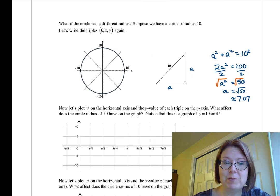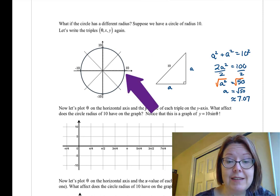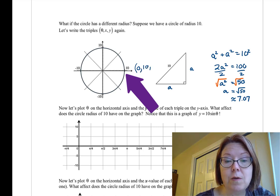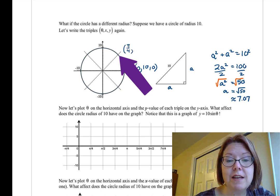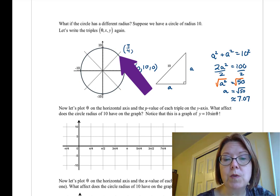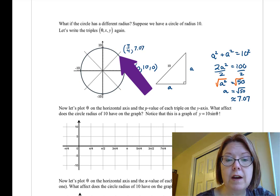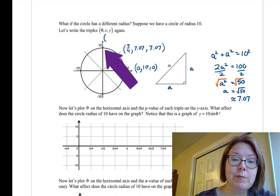So now let's write out our triples. Our first triple has an angle of 0, an x value of 10, and a y value of 0. The next triple is at π over 4, or 45 degrees. The x value would be 7.07, or square root of 50. I'm going to just write these as decimals this time to make it a little easier to get to the graph. And then the y value would also be 7.07, or the square root of 50. The next triple would be at π over 2, 0 for x, and 10 for y.